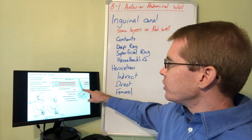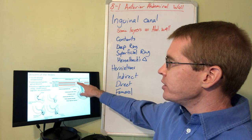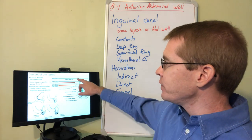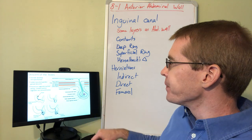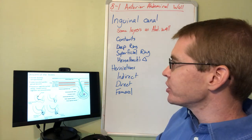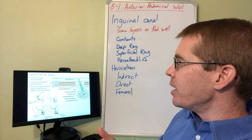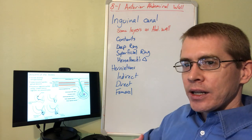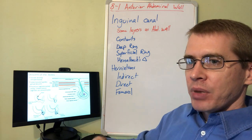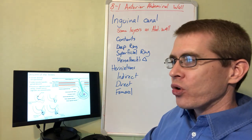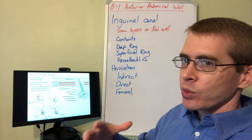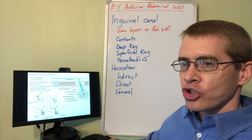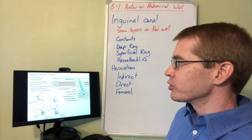The scrotum itself and the spermatic cord contain all of these structures, including the peritoneum, except for one: the transversus abdominis muscle. Because the transversus abdominis is horizontally oriented and located above the spermatic cord and above the inguinal canal, it does not get drawn down into the spermatic cord or scrotum.